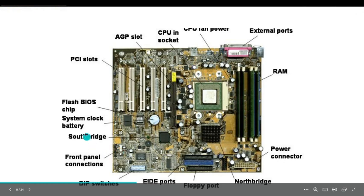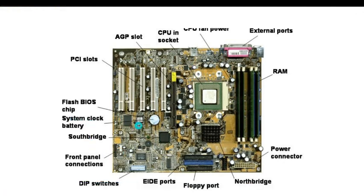These are the front panel connections. This is the system clock battery or CMOS — complementary metal oxide semiconductor battery — also called the clock battery or real-time clock. It is generally a lithium coin cell. This is the flash BIOS chip. BIOS means Basic Input Output System. It is a firmware used to perform hardware initialization during the booting process.